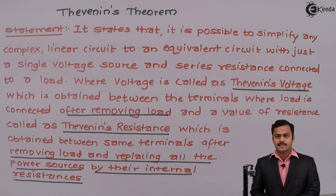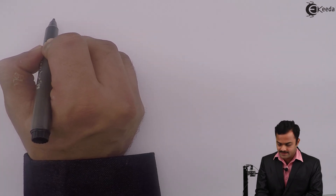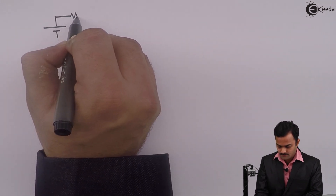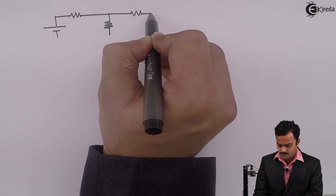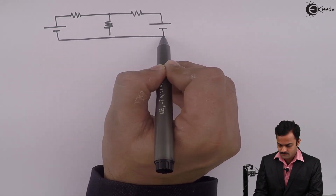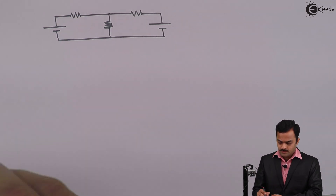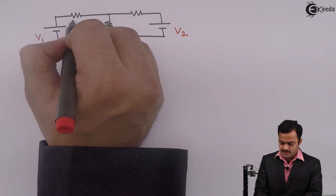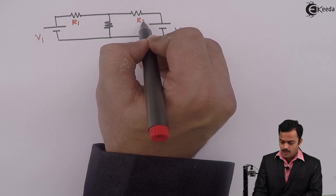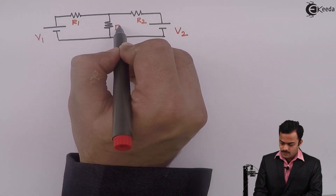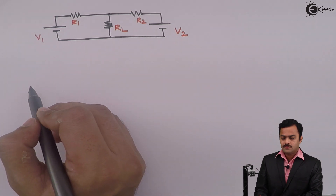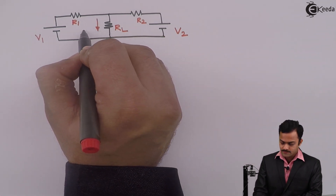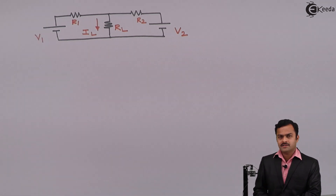In order to understand the meaning of all this, let's take a simple numerical. I will consider a generalized circuit with two batteries of voltages V1 and V2, and resistances R1 and R2. Let's consider RL as the load resistance through which we are supposed to find out the current. Let's apply Thevenin's theorem to it.